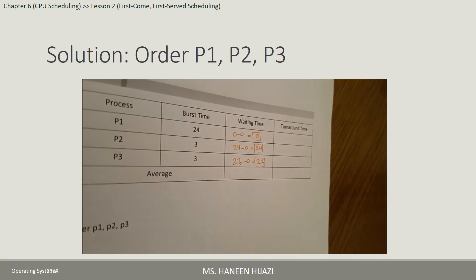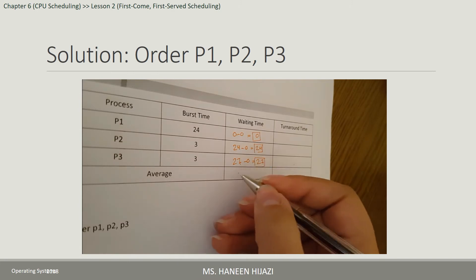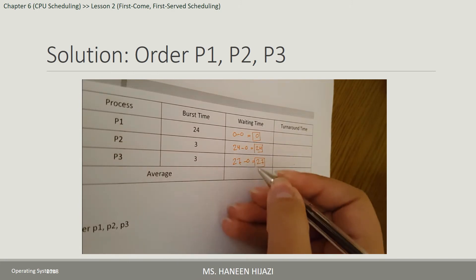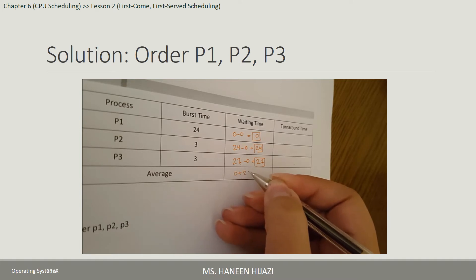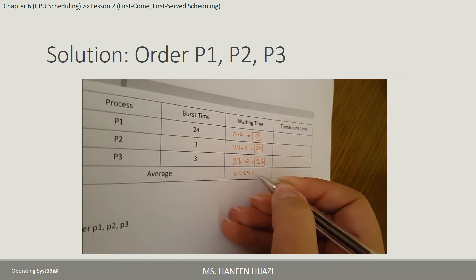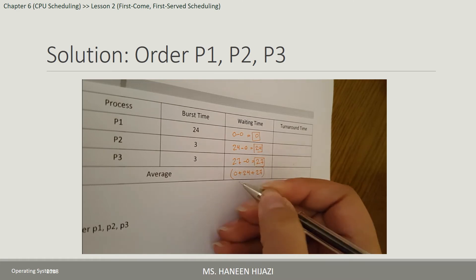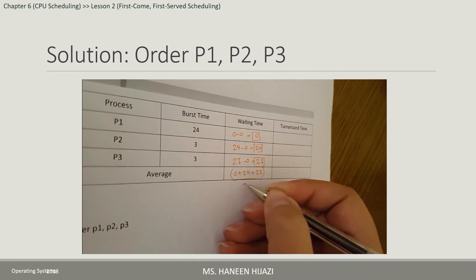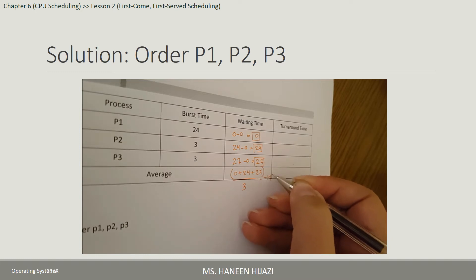هلأ بنحسب الـ Average Waiting Time للـ processes الثلاثة. هو عبارة عن مجموع الـ waiting times على عددهم: (0 + 24 + 27) / 3 = 51 / 3 = 17.